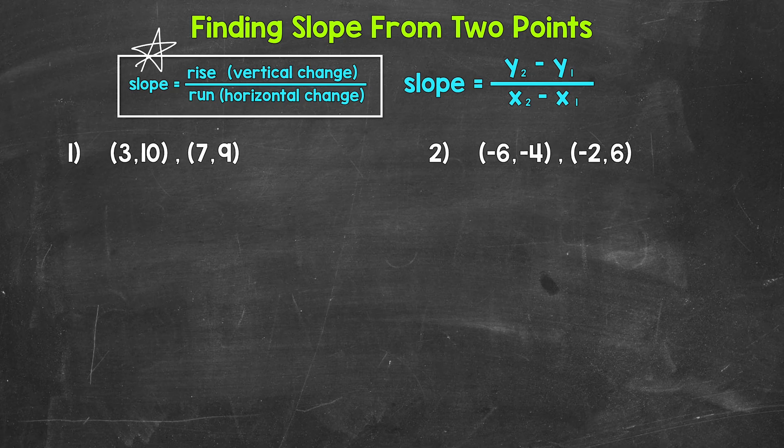For these examples, we're going to use the coordinates of two points on a line to find the slope of the line. We use this formula right here. Slope equals y2 minus y1 over x2 minus x1. y2 minus y1 gives us our vertical change, the rise, and x2 minus x1 gives us our horizontal change, so the run.